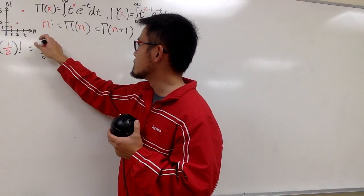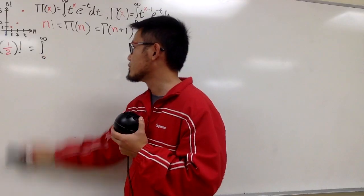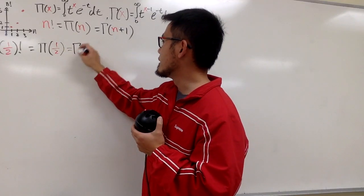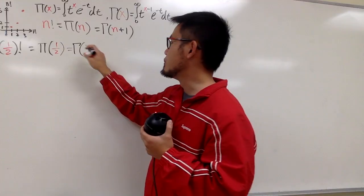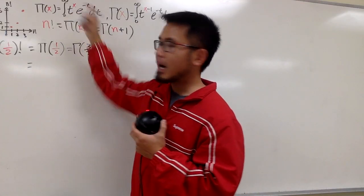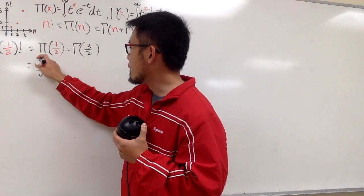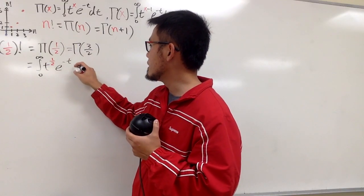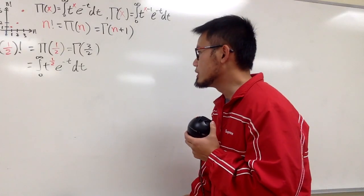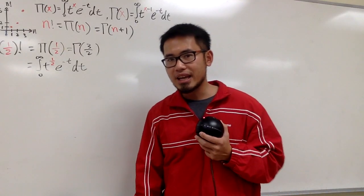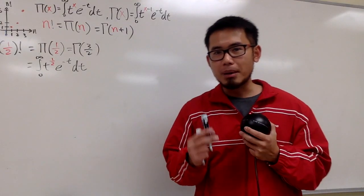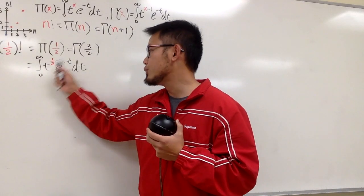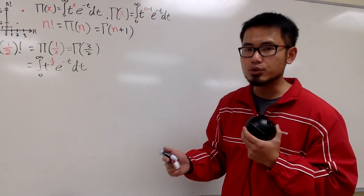So (1/2) factorial is just π of 1/2. Or if you prefer, that's γ of 1/2 + 1, which equals γ of 3/2. I'll use the π function version. This is the integral from 0 to infinity of t^(1/2) · e^(−t) dt. The question is, how can we integrate this? Previously we used integration by parts, but that t^(1/2) is really bothering us, so let me proceed with a substitution first.